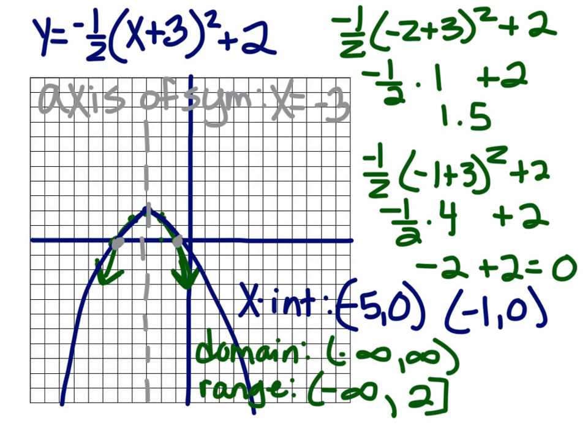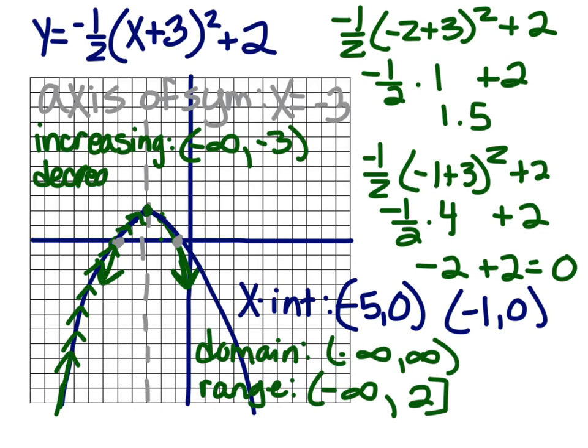I might also ask you, where is it increasing and decreasing? So where is this sucker increasing? Well, it starts increasing over here, infinitely to the left. And it's going up, up, up, up until it gets to the top of the mountain, right? At negative 3. And then it's done increasing. And then it's decreasing from the top of the mountain at negative 3, all the way infinitely down.